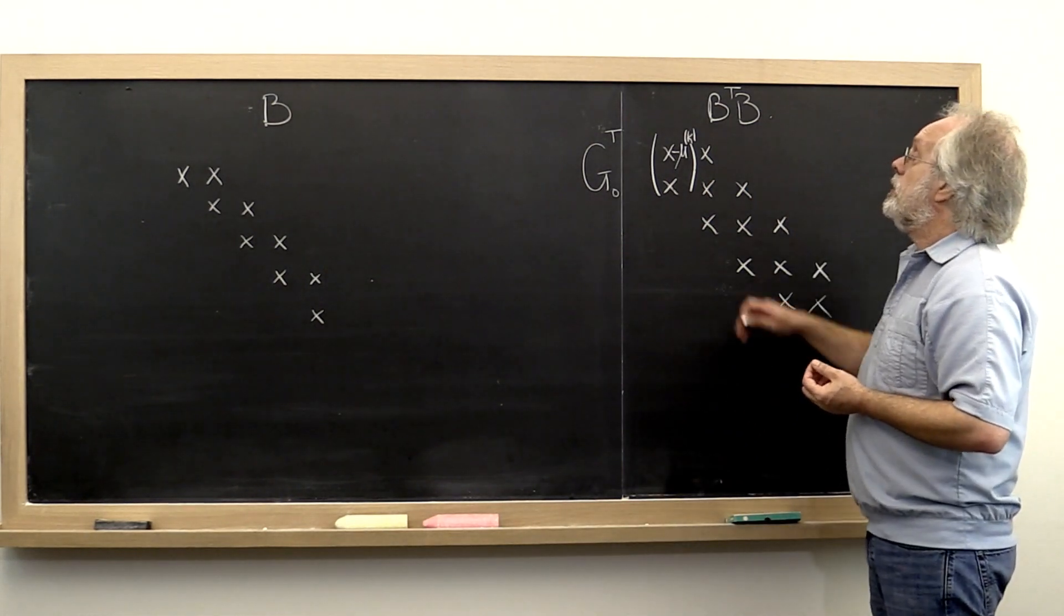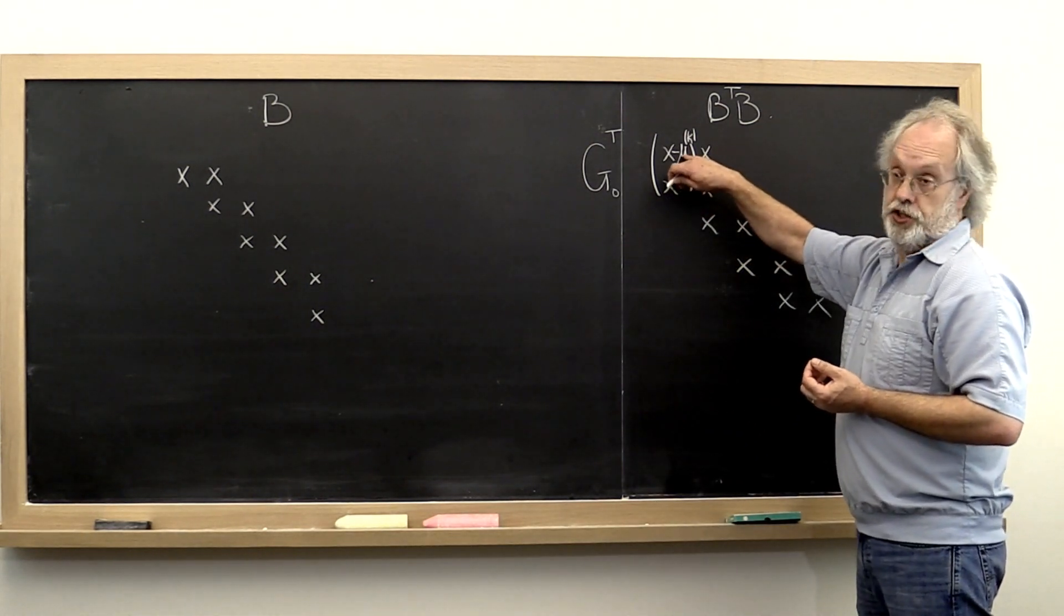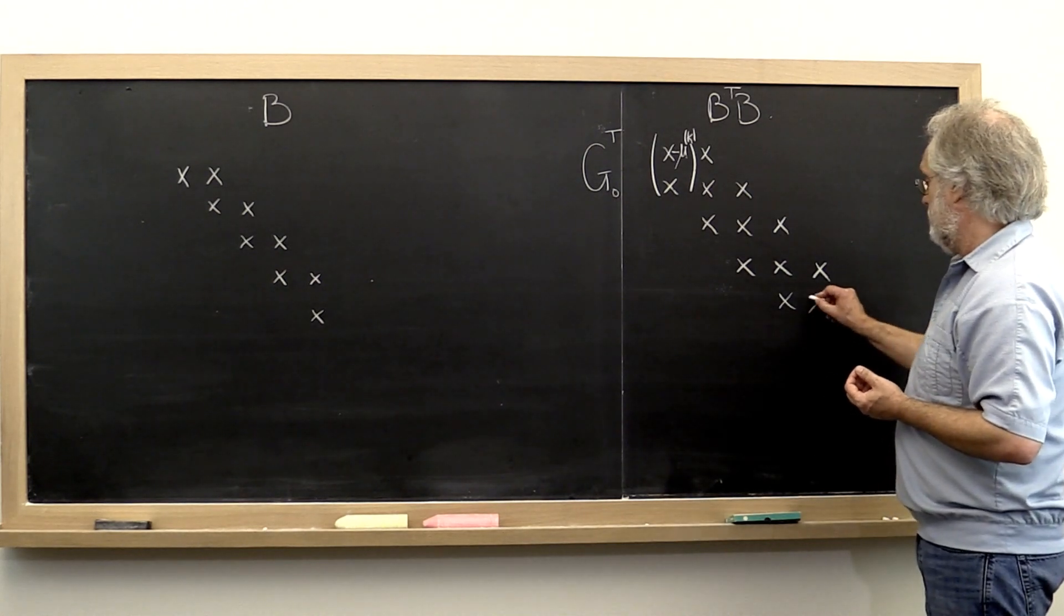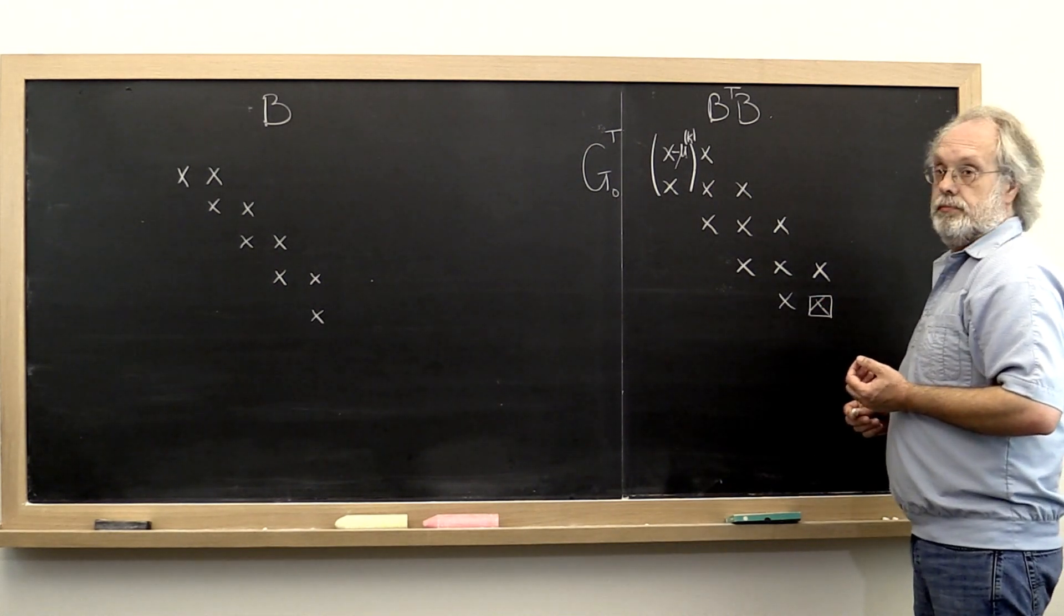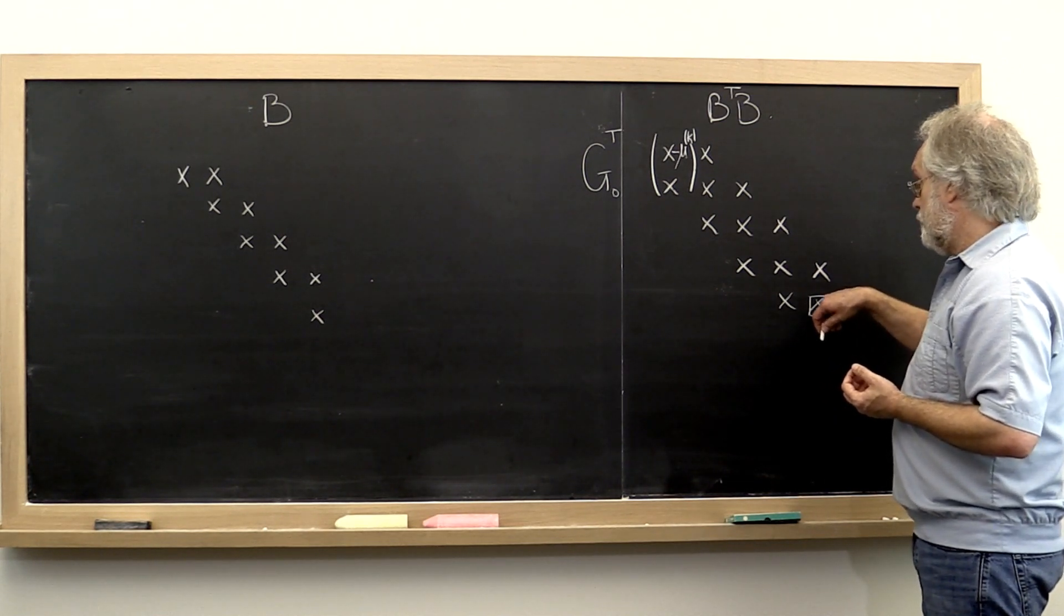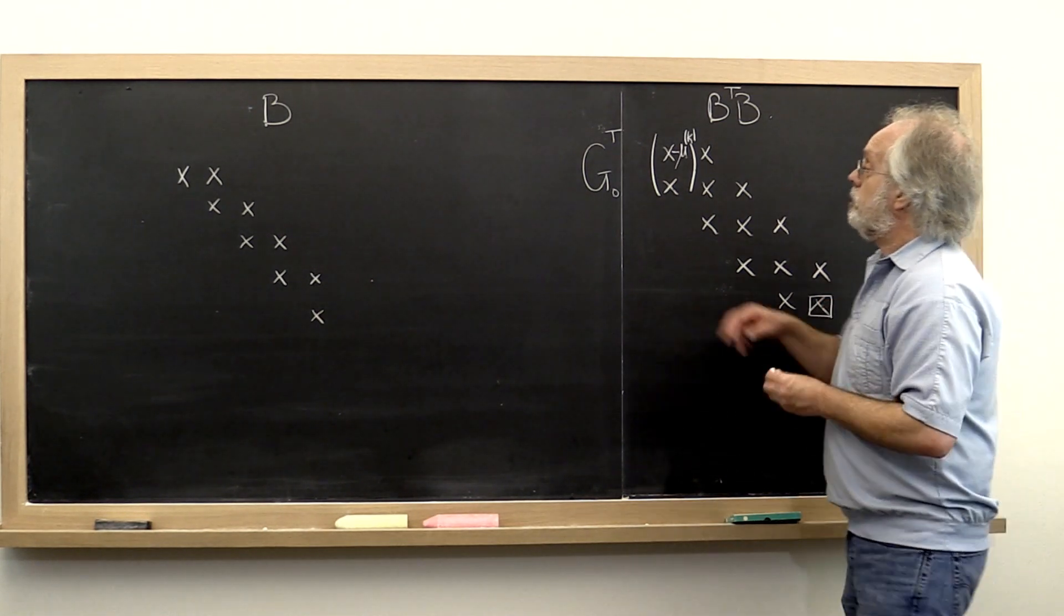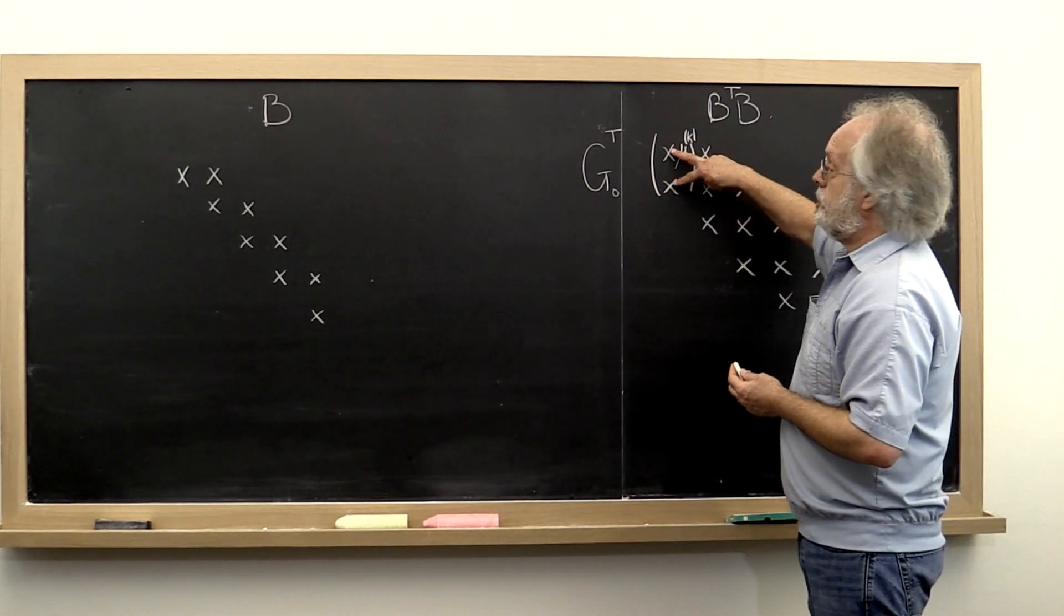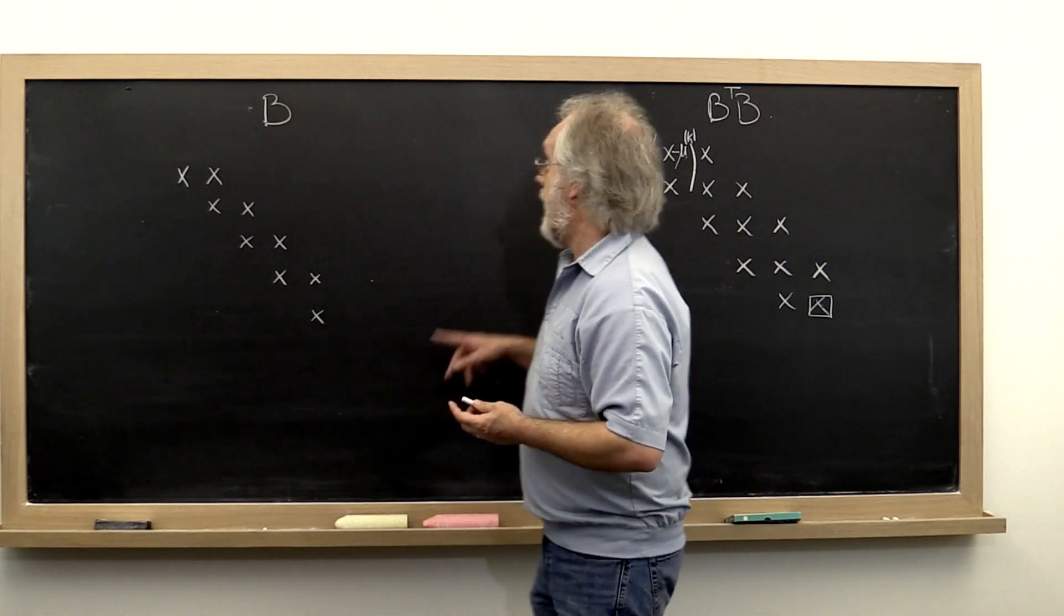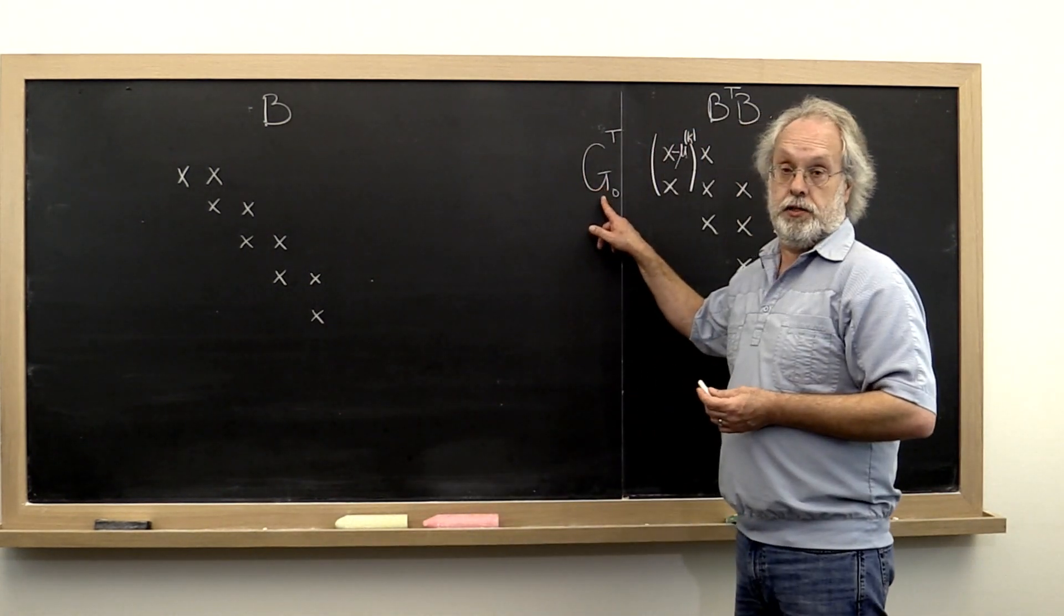Now to compute that shift, you need this element right here. So all we really need is to compute the shift to then compute these two entries from this matrix. And we've got our first Givens rotation.